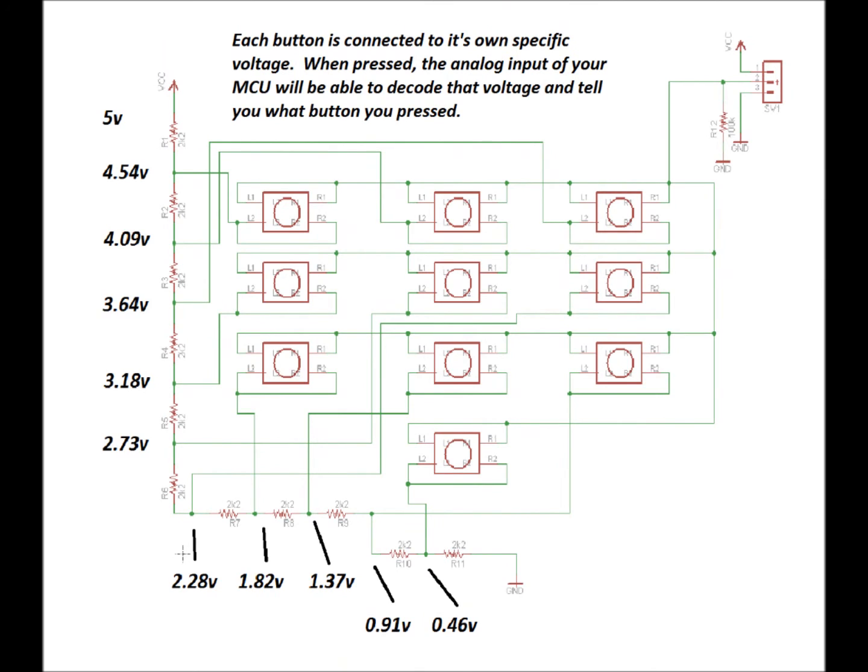Each button is connected to its own specific voltage on the voltage divider. And when you press that button, that specific voltage goes to the output that's connected to the 10k ohm pull down.